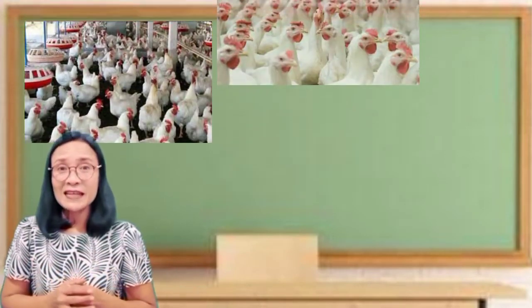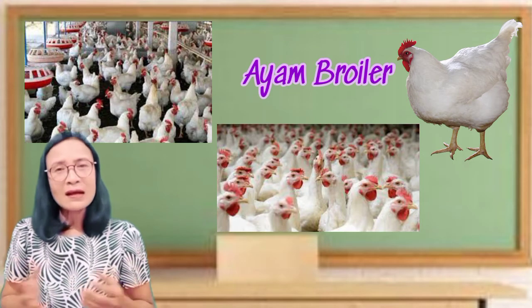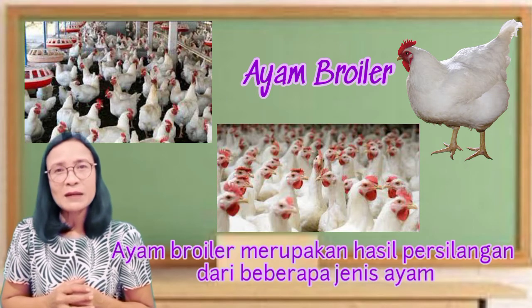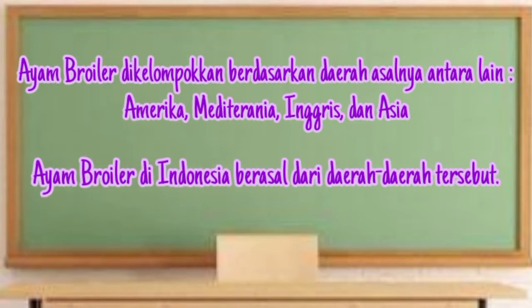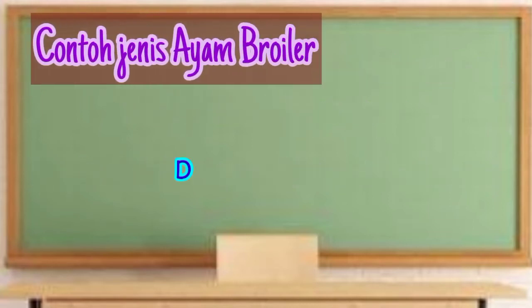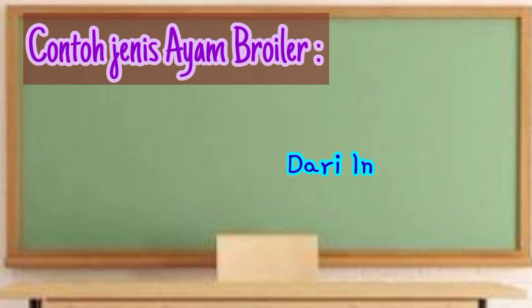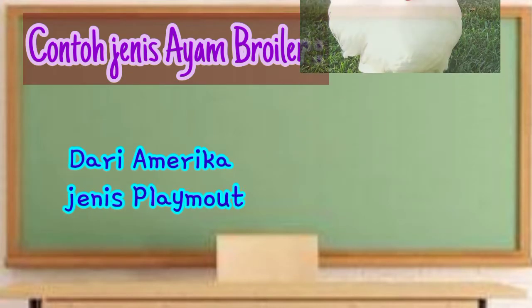Kamu tentu tidak asing dengan ayam potong atau ayam broiler yang sering dikonsumsi masyarakat. Tahukah kamu bahwa ayam broiler merupakan hasil persilangan dari beberapa jenis ayam? Ayam broiler dikelompokkan berdasarkan daerah asalnya, antara lain Amerika, Mediterania, Inggris, dan Asia. Contoh jenis ayam broiler dari Asia adalah jenis Brahma yang berasal dari India, dari Inggris jenis Cornish, dan dari Amerika jenis Plymouth Rock.